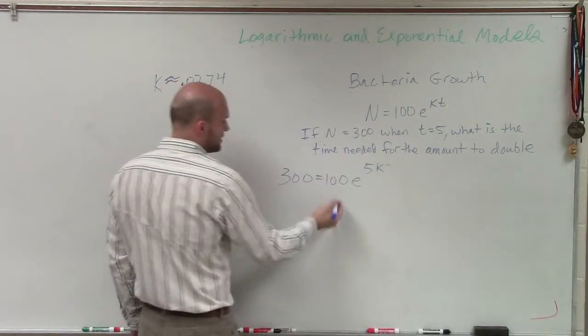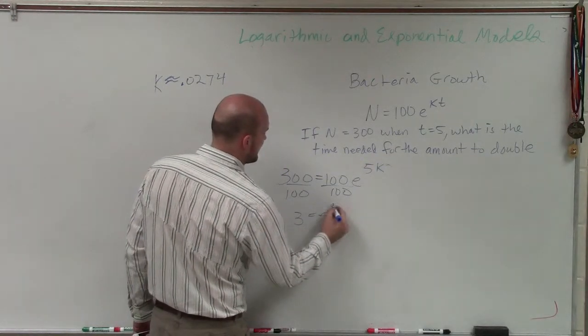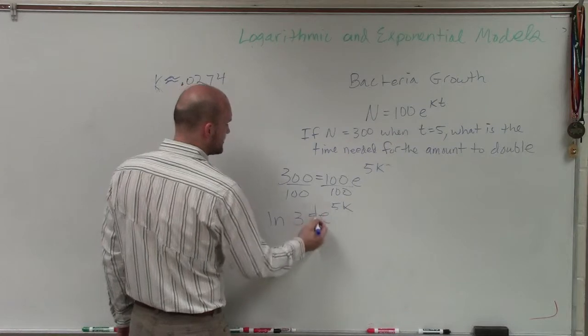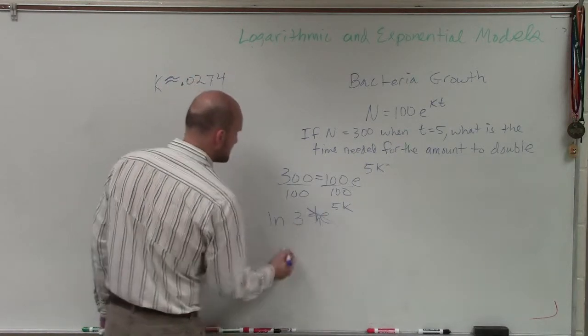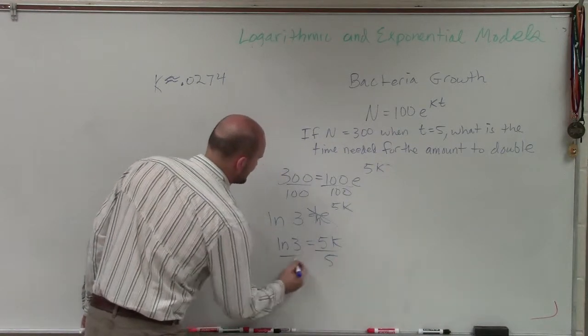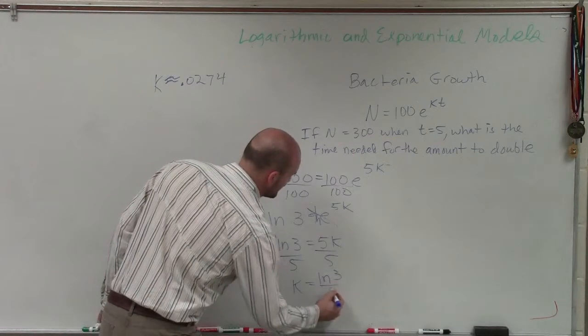So now, to solve for k, I'll divide by 100. So I have 3 equals e to the 5k. Now, to solve for this, I'm just going to take the natural logarithm of both sides. Therefore, I have ln of 3 equals 5k. Divided by 5, k equals the ln of 3 divided by 5.